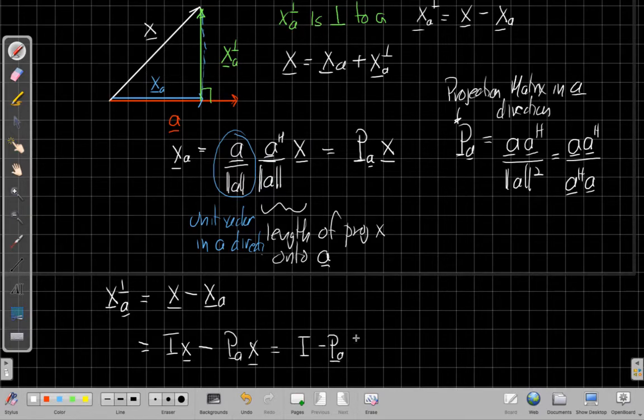And then I can say, just what I had a second ago, x sub a, the projection in the a direction, I can write it with the projection matrix. And then I can factor the x off the right-hand side of this. So I can say, if I take the identity matrix and subtract the projection matrix and multiply that by x, I will get, go directly to this.